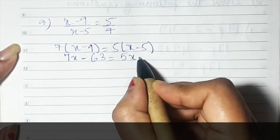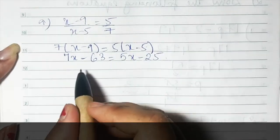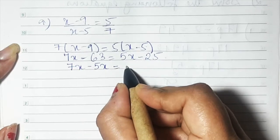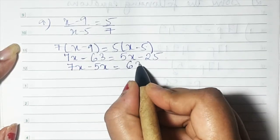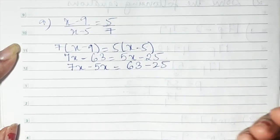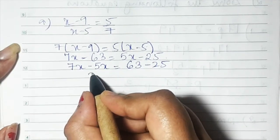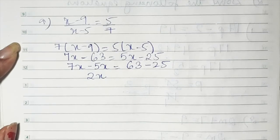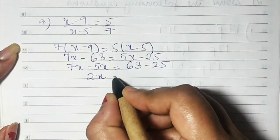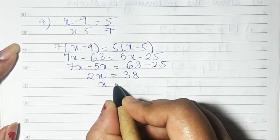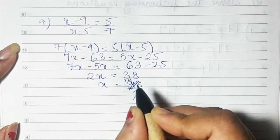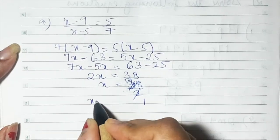5 into x is 5x, and 5 fives are 25. Now take like terms together: 5x goes to the left and becomes minus 5x; minus 63 goes to the other side and becomes plus 63. So 7x minus 5x is 2x, and 63 minus 25 is 38. Therefore x equals 38 upon 2, and the value of x is 19.